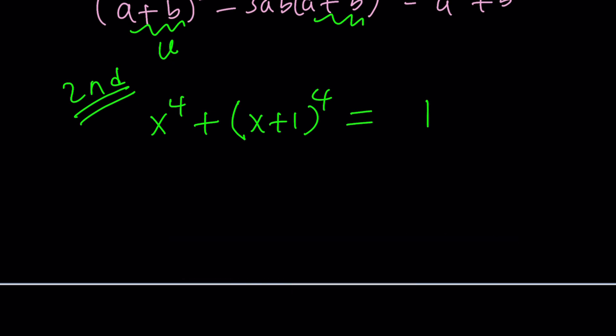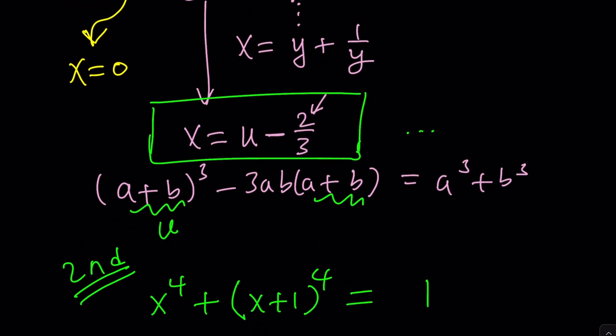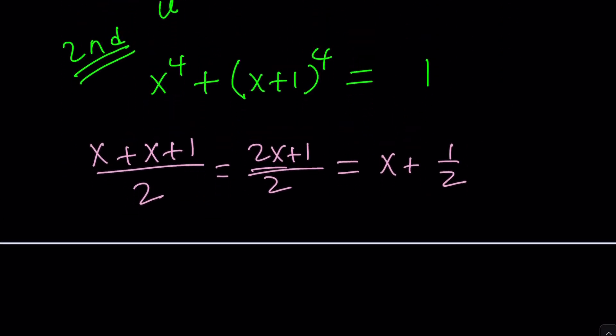So here's how we can apply it. What is the average of x and x plus one? Let's find out. We're going to add them and divide by two. This will be two x plus one divided by two. And you can easily write this as x plus one half. So x plus one half is very critical to this equation because it's in the middle of x and x plus one. It's the average and it needs to equal to some variable. Let's go ahead and set this equal to t.